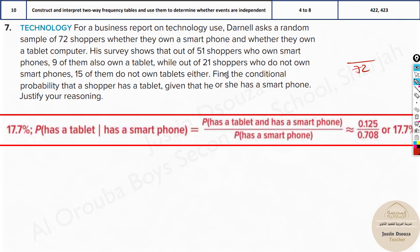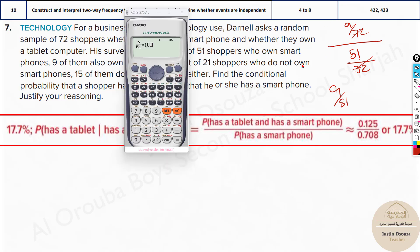That is the total sample space, divided by 72. And what is over here? How many shoppers have a smartphone? 51 own a smartphone, so 51 by 72. What is tablet and smartphone? You can see 9 of them also own a tablet. So of your 51 shoppers who own a smartphone, 9 also own a tablet. So 9 basically 9 out of 72. So basically cancel this out. 9 by 51 is the answer.